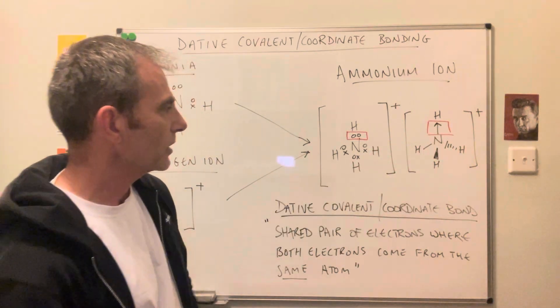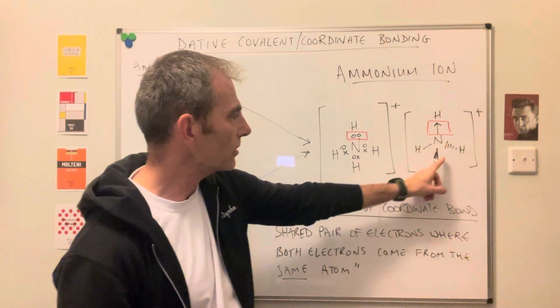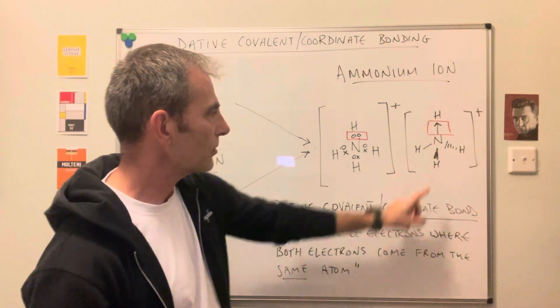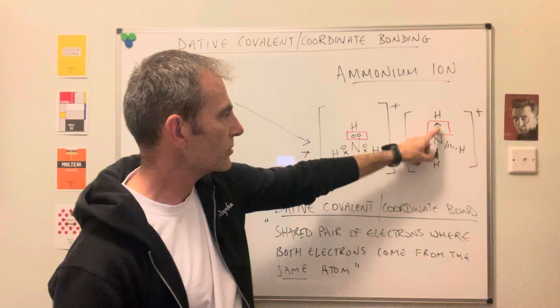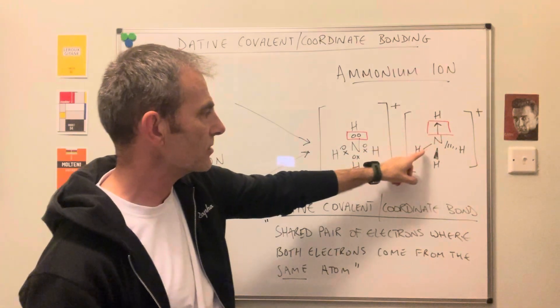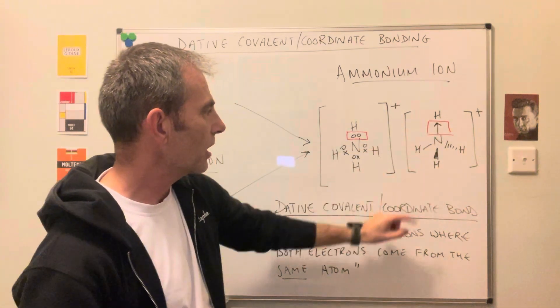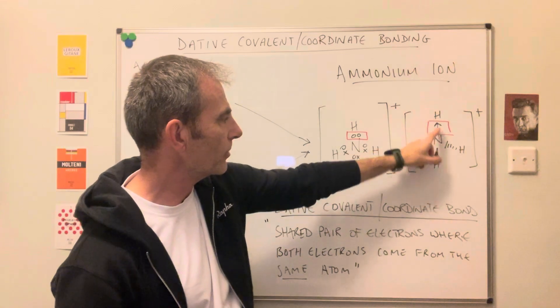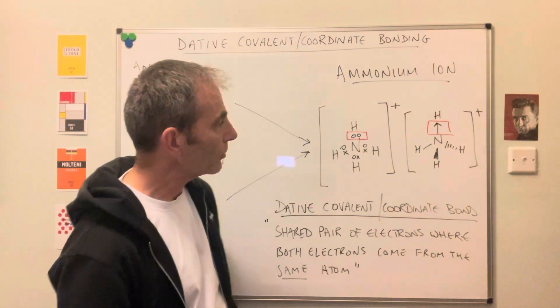You would have a tetrahedral shape. So you'd have the nitrogen in the middle, you've got two bonds in the plane, so that's the straight line. And you'll notice the dative covalent bond or coordinate bond is represented by an arrow.